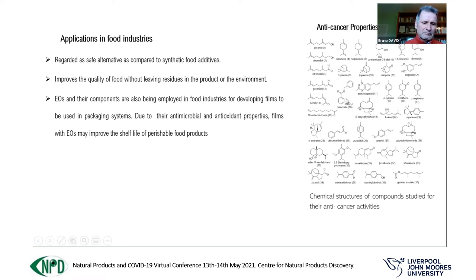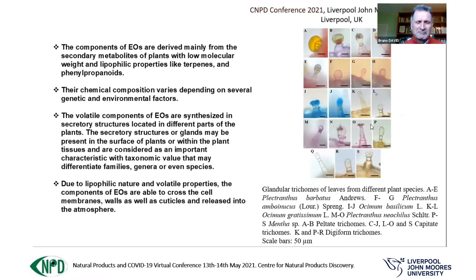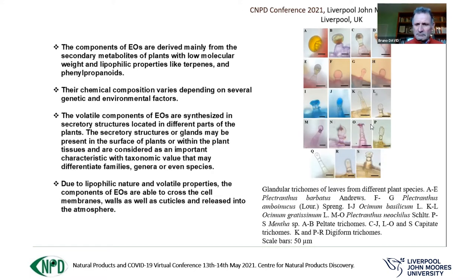These are chemical structures of some compounds known as essential oils with anti-cancer properties. Components of essential oils are derived mainly from secondary metabolites of plants with low molecular weight and lipophilic properties, like terpenes and phenylpropanoids. Their chemical composition varies depending on several genetic or environmental factors or the plant growth stage. The volatile compounds of essential oils are synthesized in secretory structures or glands, which may be located on the surface of the plant or within the plant tissue, and these are considered important because they may differentiate families, genera, or even species.